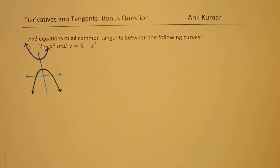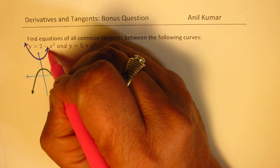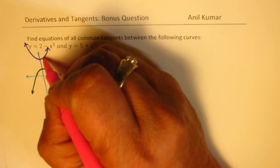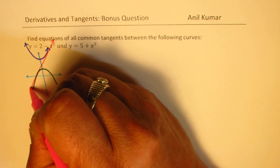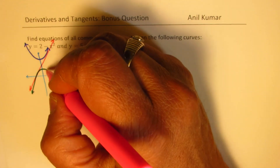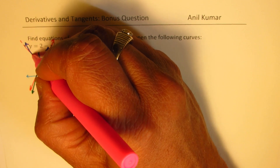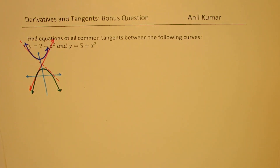When we say we have common tangents, the scenario could be something like a line which goes through both, touching them. So a tangent to both could be something like this. Similarly, we could also have another line coming from the other direction. So we are expecting two tangents, and what we need to do is find the equations of these tangents.